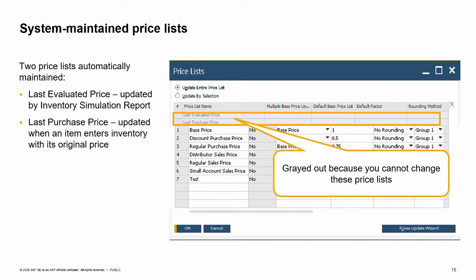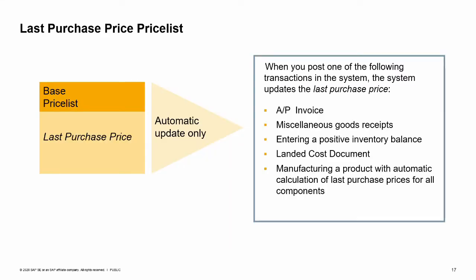There are two price lists that are automatically created and that you cannot maintain: the Last Evaluated Price List and the Last Purchase Price List. The system maintains these price lists automatically. The Last Evaluated Price List is automatically updated when you run the Inventory Valuation Simulation Report, and is calculated only for the item's inventory unit of measure and only in primary currency. The Last Purchase Price is automatically updated when an item enters inventory with its original price.